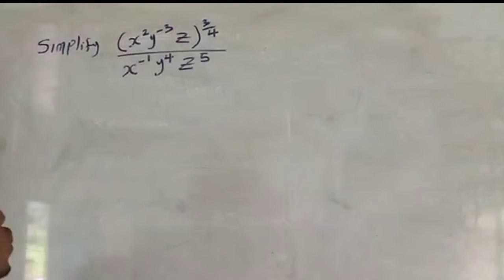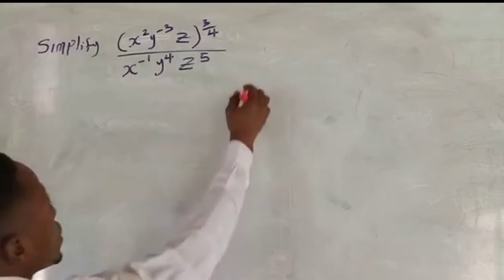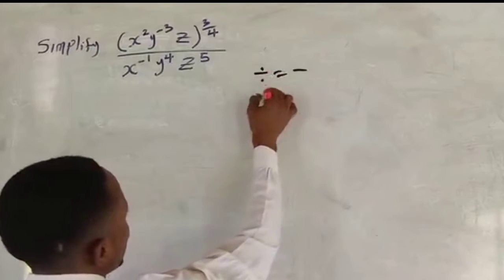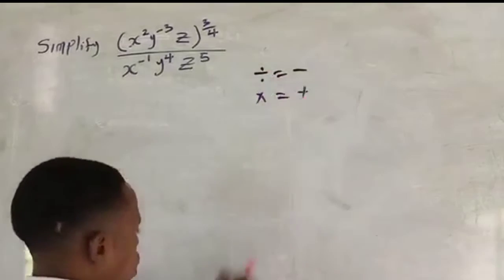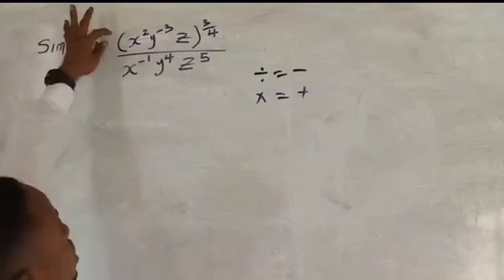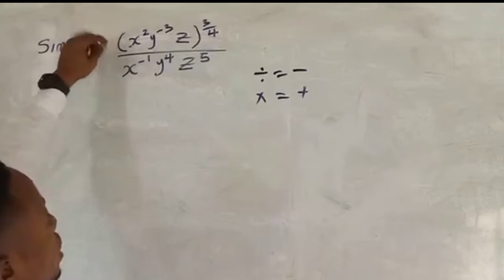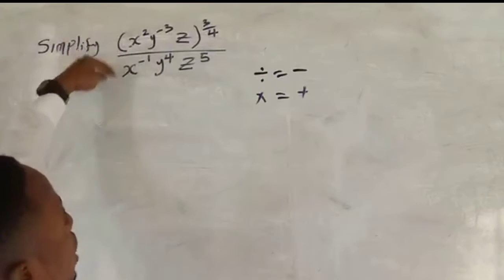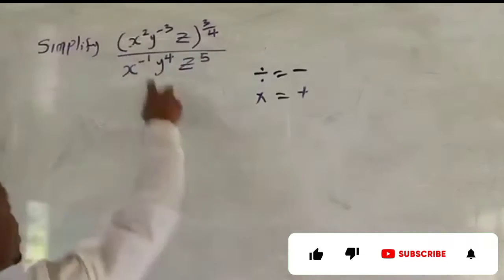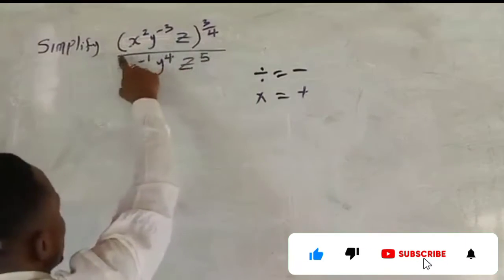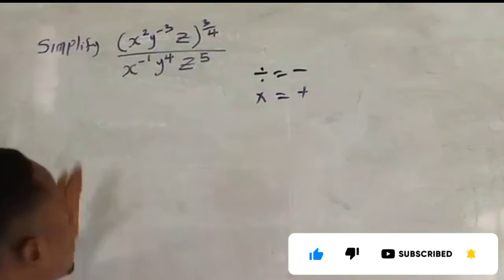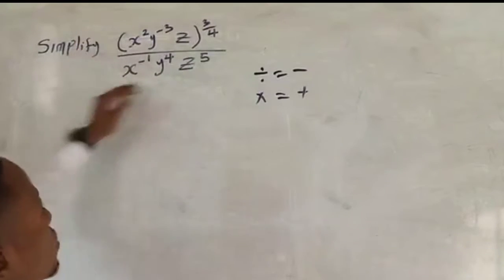The first things to recall about indices: if you have division, you subtract the exponents; if you have multiplication, you add the exponents. In this expression, because we have a numerator and a denominator, this is a division, so the lower part will carry a minus sign when we bring everything to a single line.